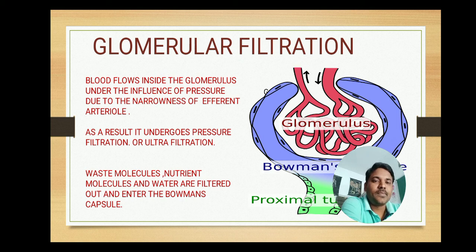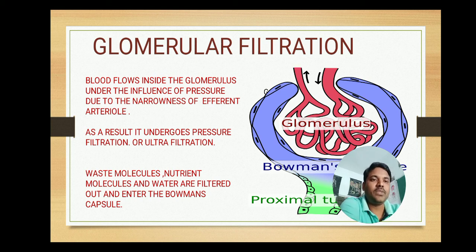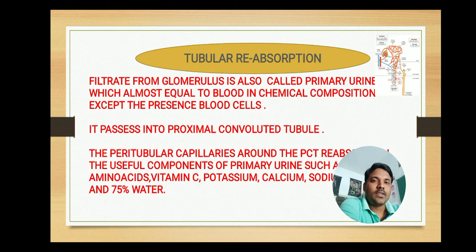That is why it is called pressure filtration or ultrafiltration. Generally, waste molecules, excess nutrient molecules, and water are filtered out and enter the Bowman's capsule from the glomerulus. The filtrate then crosses the Bowman's capsule through podocyte cells.